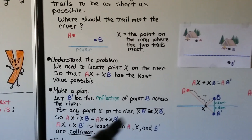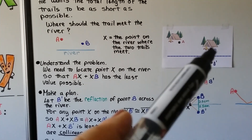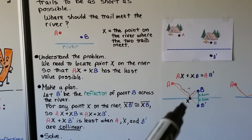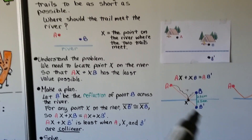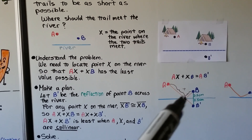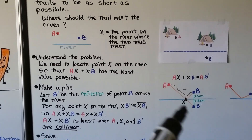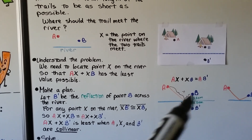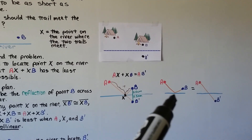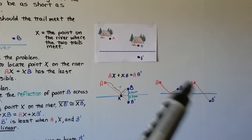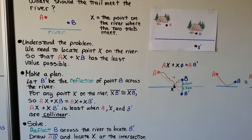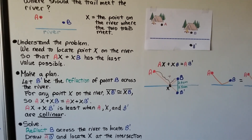To make a plan: let B prime be the reflection of point B across the river. For any point X on the river, segment XB prime is congruent to segment XB. So AX plus XB equals AX plus XB prime. AX plus XB prime is least when A, X, and B prime are collinear — all on the same line.